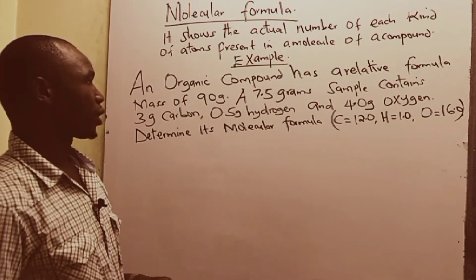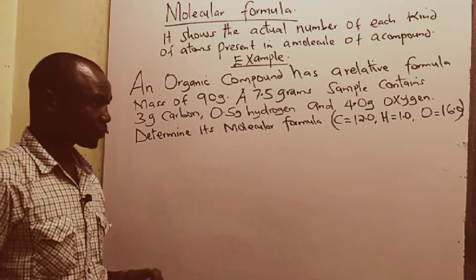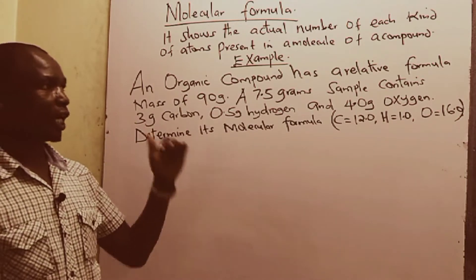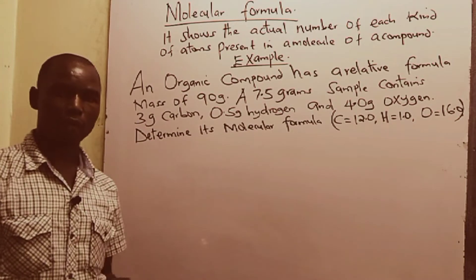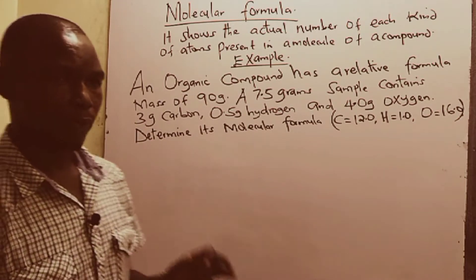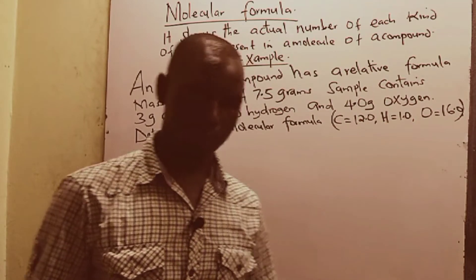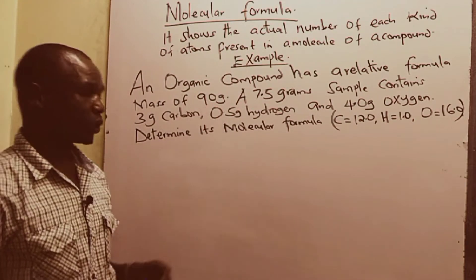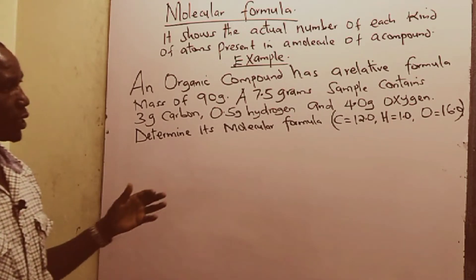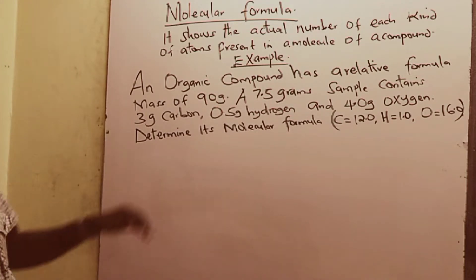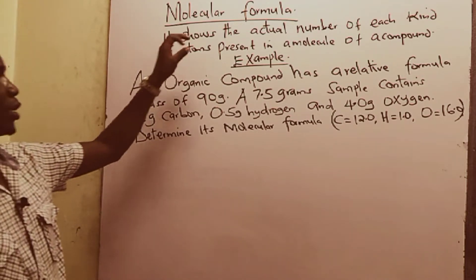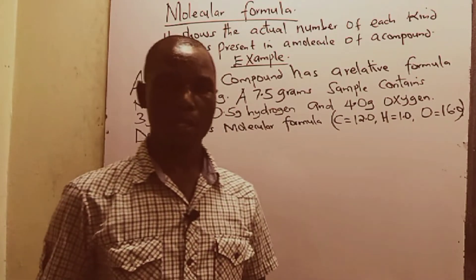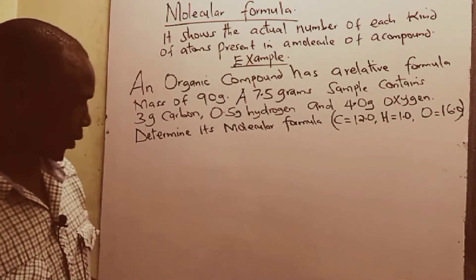Under molecular formula, it is simply a formula that will show you the actual number of each kind of atoms present in a molecule of the compound. For us to be able to calculate the molecular formula, we must first get the empirical formula, because the molecular formula is a multiple of the empirical formula.